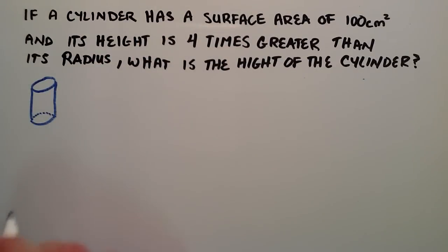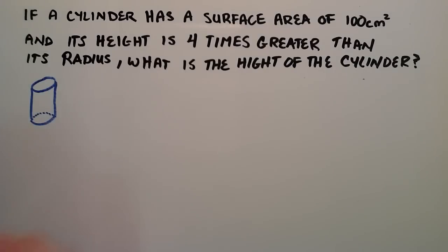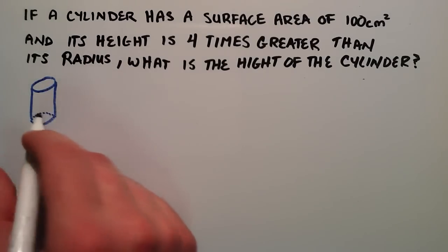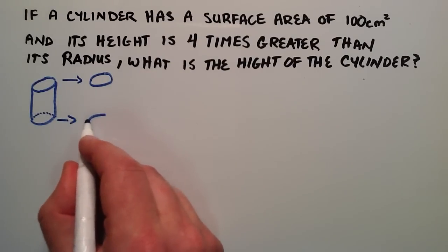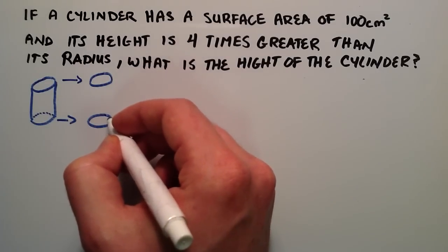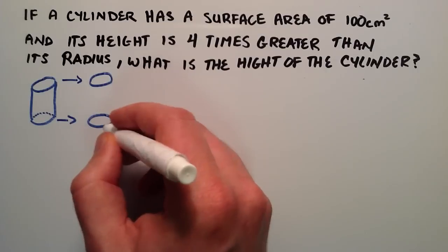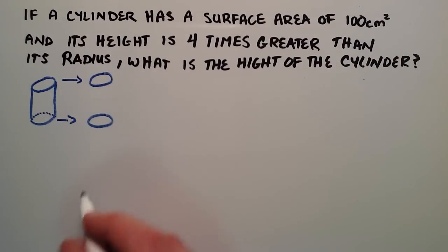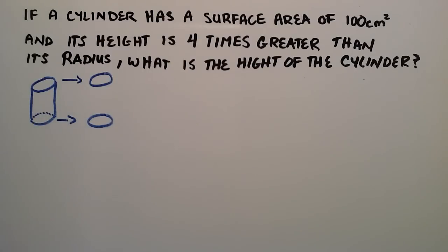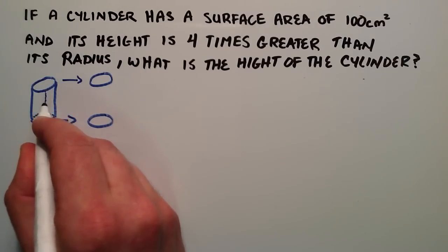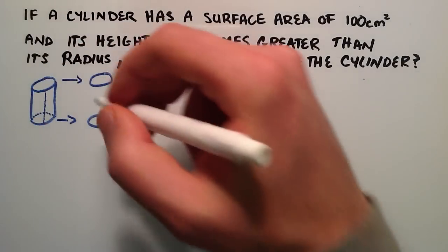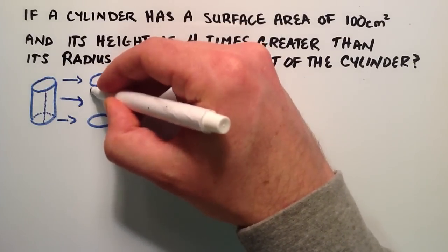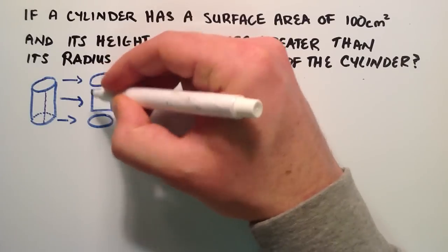The surface area of this cylinder consists of three different parts: the top, the bottom, and everything around the outside. If we pull off the top, we're just looking at a circle, and the same with the bottom — just another circle. These two parts are identical: same area, same radius, same perimeter. For the third part, think of it like a soda can with a wrapper. If we cut the wrapper from top to bottom and peel it off, then flatten it out, we realize we just have a rectangle.